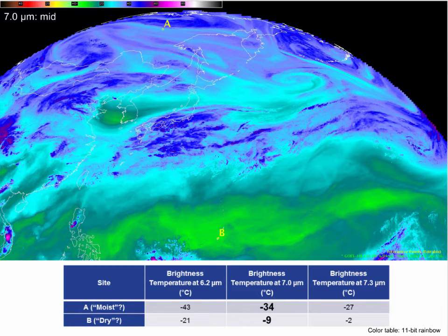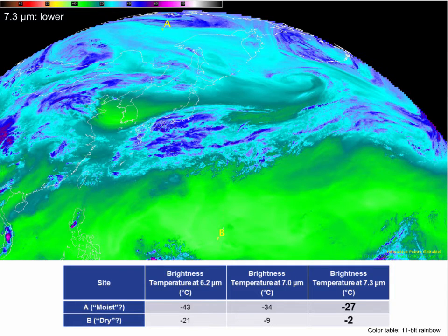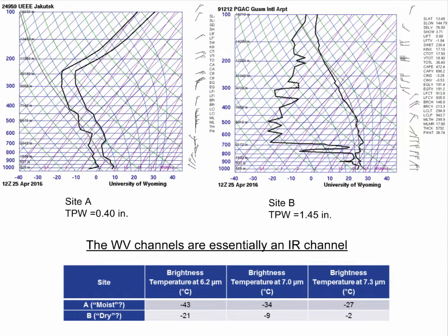Moving down in altitude, we analyzed the 7.0 micron mid-level water vapor band. Note the large difference in brightness temperatures between these locations. Keep in mind, clear sky conditions exist at both points, so we're not observing cloud top temperatures. Moving further down in altitude with the 7.3 micron band, the difference in brightness temperatures between the two points is about 25 degrees Celsius. Now we analyze soundings at points A and B to gain a better understanding. Is it really more moist at point A than point B? Absolutely not — the TPW at point B in the tropics is much greater than point A in the Arctic. The majority of the variation between these points can be explained by the large temperature difference.